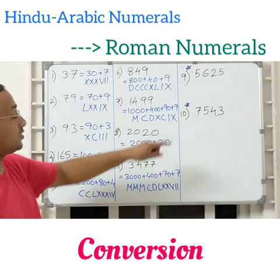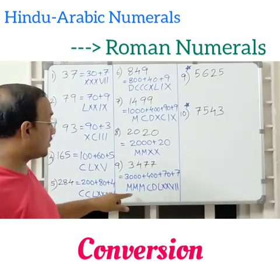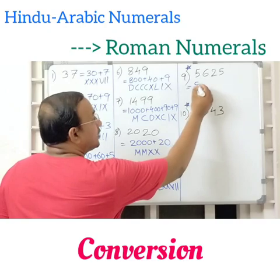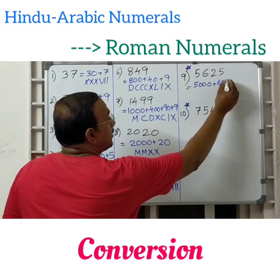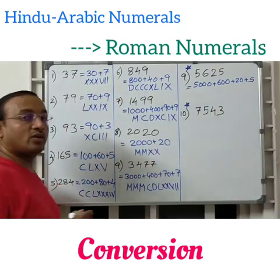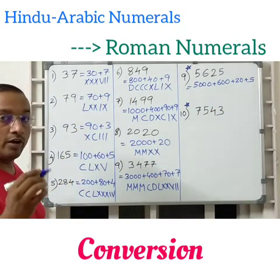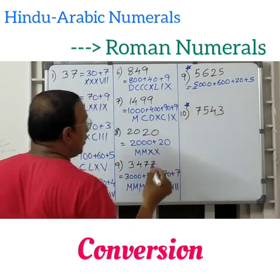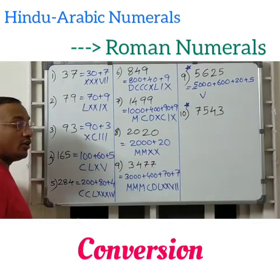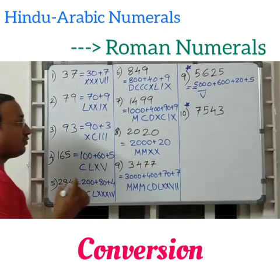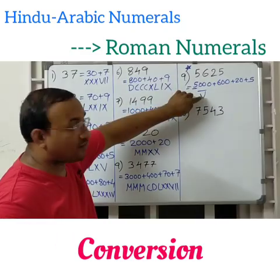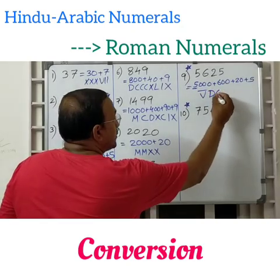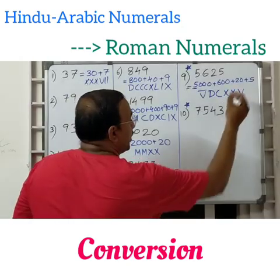Now we have two special numbers exceeding 3999, more than 3M. We can write these as well. For 5625, expanded form is 5000 plus 600 plus 20 plus 5. We don't have a basic Roman numeral for 5000, but the special notation is to write V with a bar over it. The bar means multiply by 1000, so V-bar equals 5000. Then 600 is DC, 20 is XX, and 5 is V.